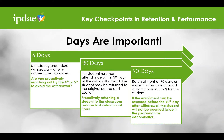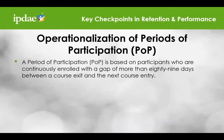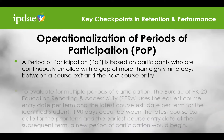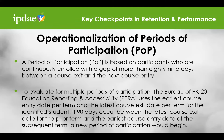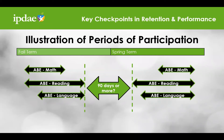Let's take a more in-depth look at these periods of participation, or POPs. A period of participation is based on participants who are continuously enrolled with a gap of more than 89 days between a course exit and the next course entry. To evaluate for multiple periods of participation, the Bureau of PK-20 Education Reporting and Accessibility, known as PERA, uses the earliest course entry date per term and the latest course exit date per term for the identified student. If 90 days occur between the latest course exit date for the prior term and the earliest course entry date of the subsequent term, a new period of participation would begin. This slide provides an illustration of periods of participation — notice that for each subject, a new period of participation begins when the student returns after an absence of 90 or more continuous instructional days.